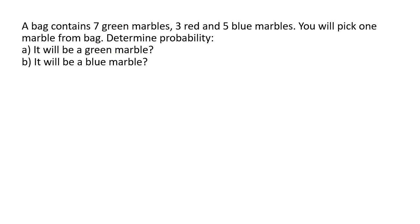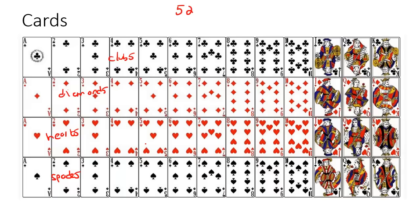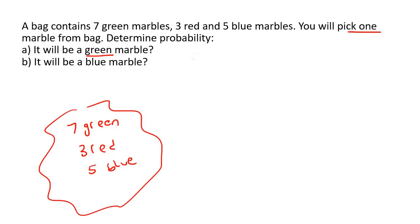A bag contains 7 green marbles, 3 red, and 5 blue. You will pick one marble — that, once again, is a single event. Determine the probability that you will pick a green marble. There are 7 green marbles, and altogether 7 plus 3 plus 5 is 15 marbles, so that's 7 out of 15. What is the probability of picking a blue marble? There are 5 blue marbles out of 15, which simplifies to 1 out of 3.